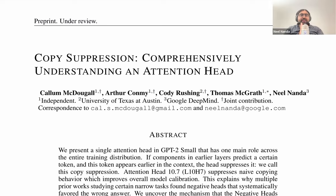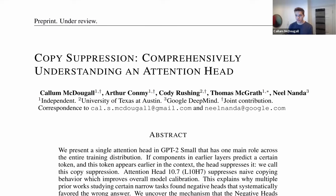So to start us off, Callum, do you want to give us a one-minute TLDR? The TLDR takeaway is that we've identified a particular attention head in GPT-2 Small, head 10.7, and we think we essentially understand the majority of what this head does on the entire distribution - in a general sense rather than a specific sense. You could almost say we comprehensively understand it. What this head does is an algorithm called copy suppression, which involves detecting when a particular token is predicted, and that token also appears earlier in the context, attending back to that token, and suppressing the prediction of that token.